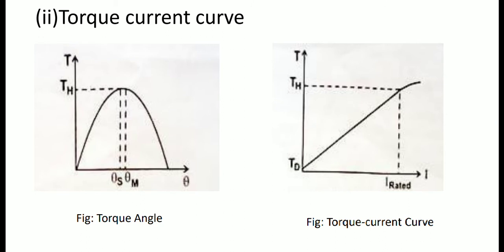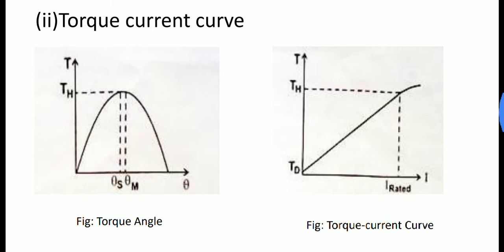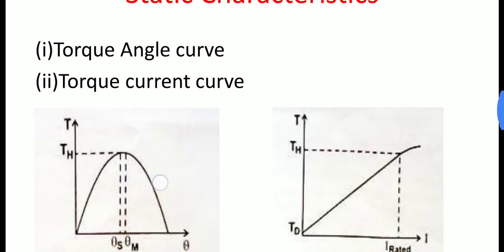Next is detent torque, TD. It is the maximum load torque which the un-energized stepper motor can withstand without slipping. The detent torque is due to magnetism and is therefore available only in permanent magnet and hybrid stepper motors — not in variable reluctance type. It is about 5 to 10 percent of the holding torque TH.